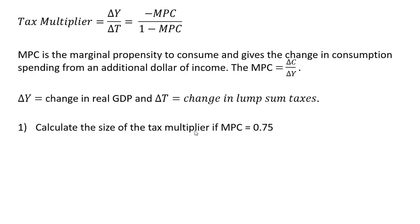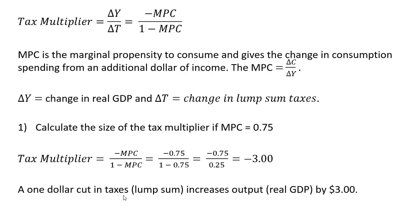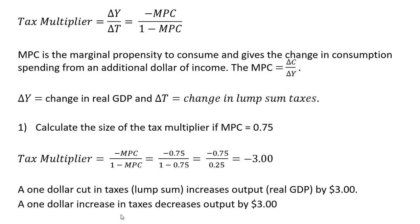Let's calculate the size of the tax multiplier if the MPC equals 0.75. Taking our tax multiplier equation and substituting in 0.75: minus 0.75 divided by 0.25 equals minus 3. So a $1 cut in taxes increases output or real GDP by $3. If we were to increase taxes by $1, output would fall by $3 for every dollar increase in taxes.